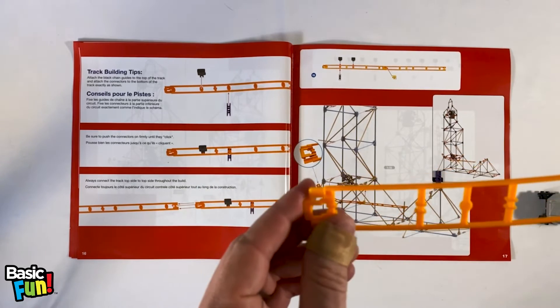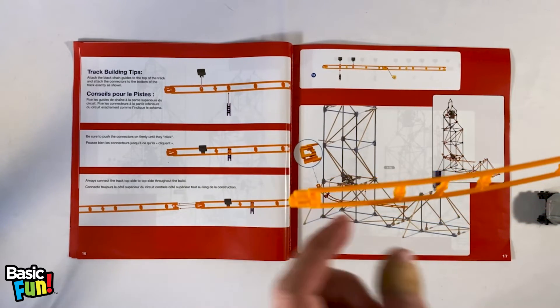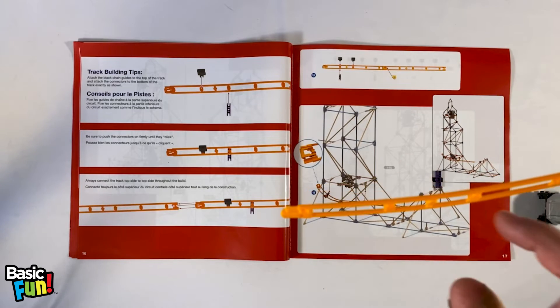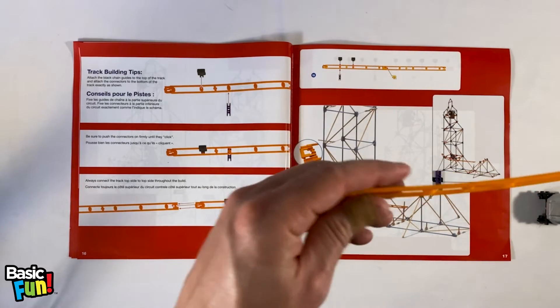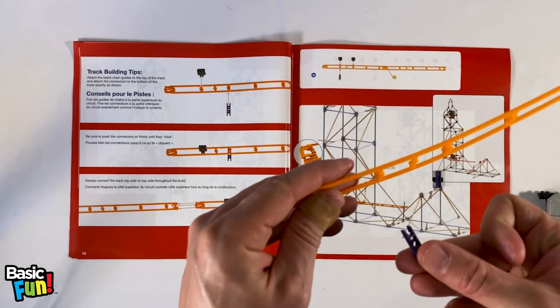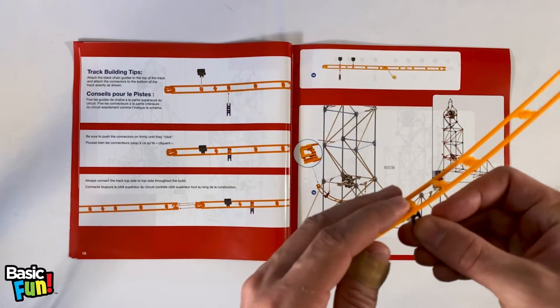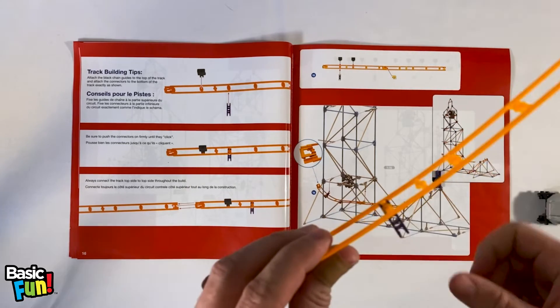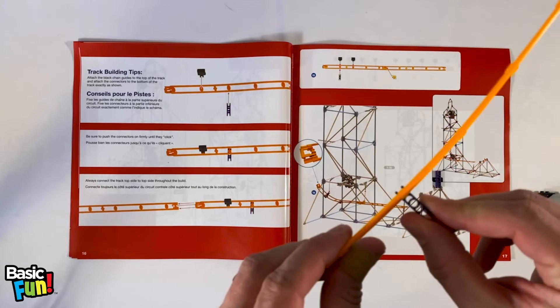You're always going to attach connectors to either the bottom side of the track or from the sides, never from the top. So if I use a straight connector here, I can snap that onto the bottom and you'll hear that click. It's nice and secure.